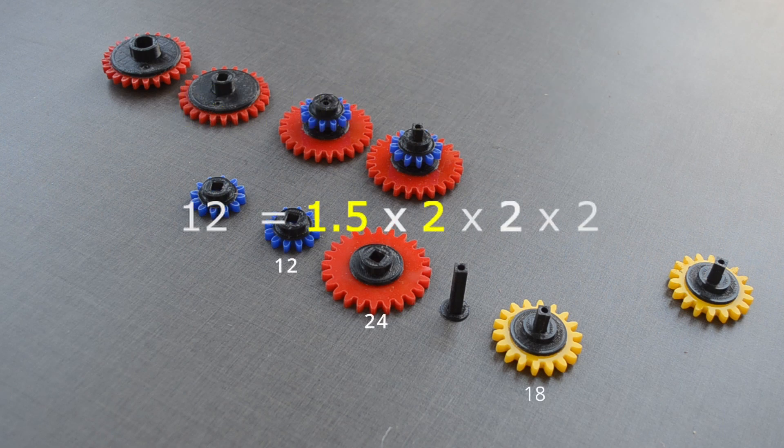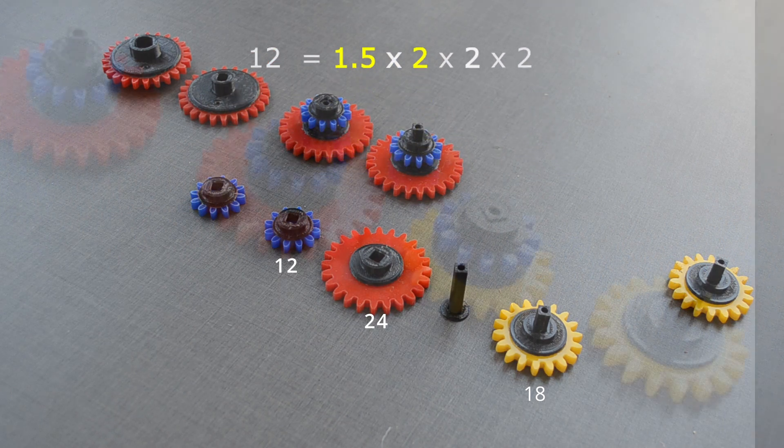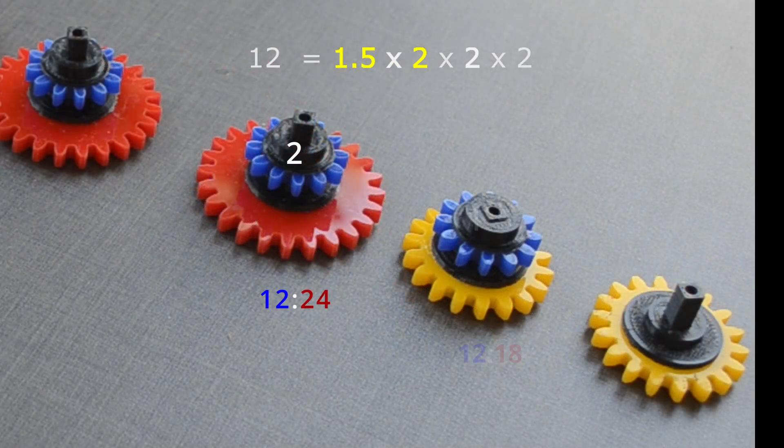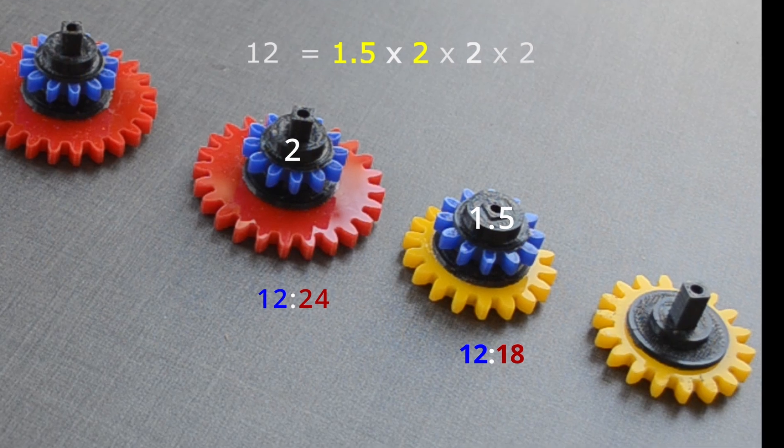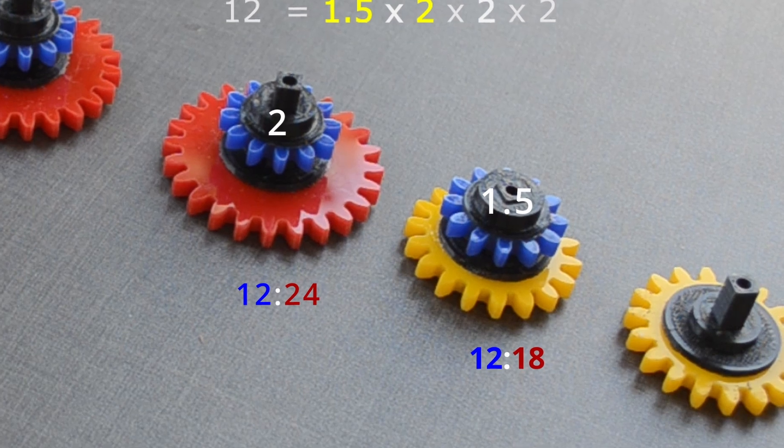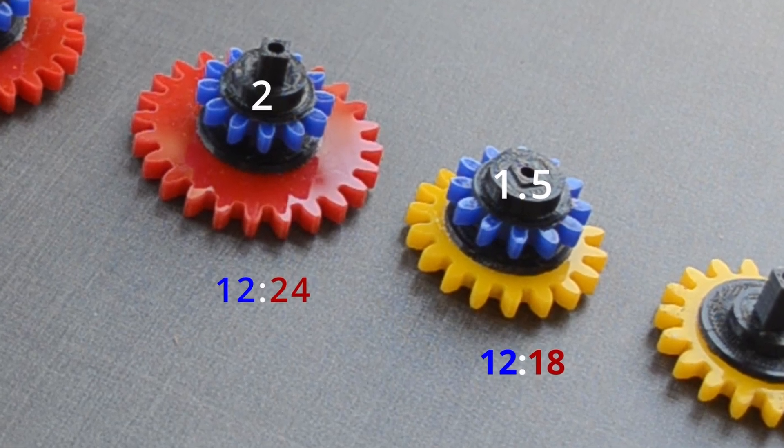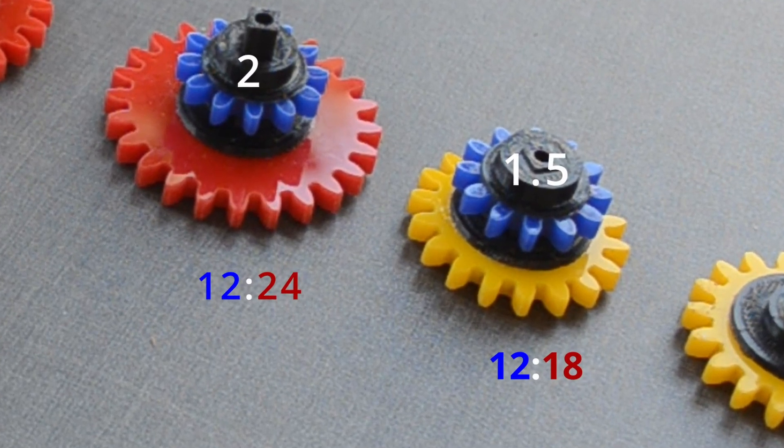Let us break it down further. We can rewrite this equation with 1.5 × 2 as well. That means we will have two sets of compound gears: one with the reduction ratio of 1.5 while other with the reduction ratio of 2. As you know, we have gears with 12, 18, and 24 teeth. Number 12 has good divisibility. With the help of 12 and 18 teeth gear, we can achieve the ratio of 1.5, while with the help of 12 and 24 teeth, we can achieve the ratio of 2.